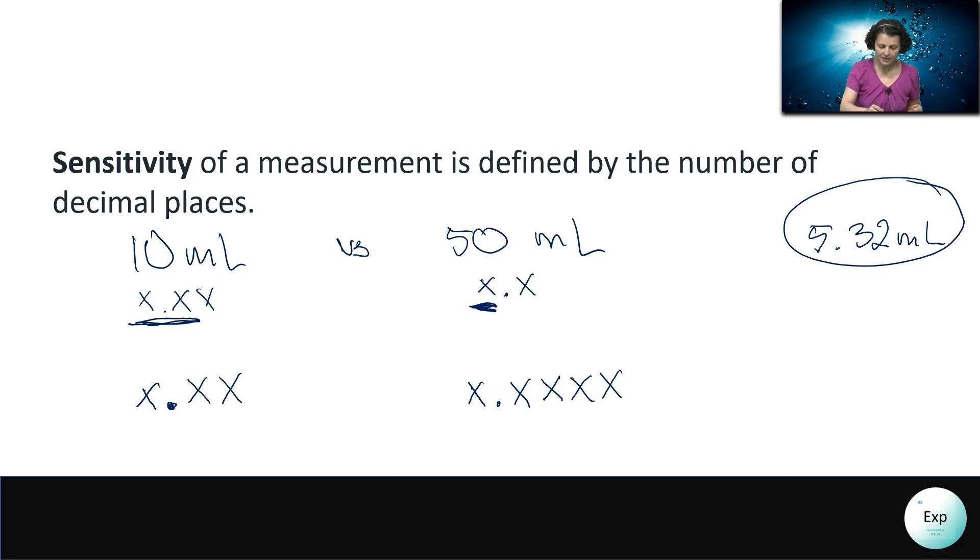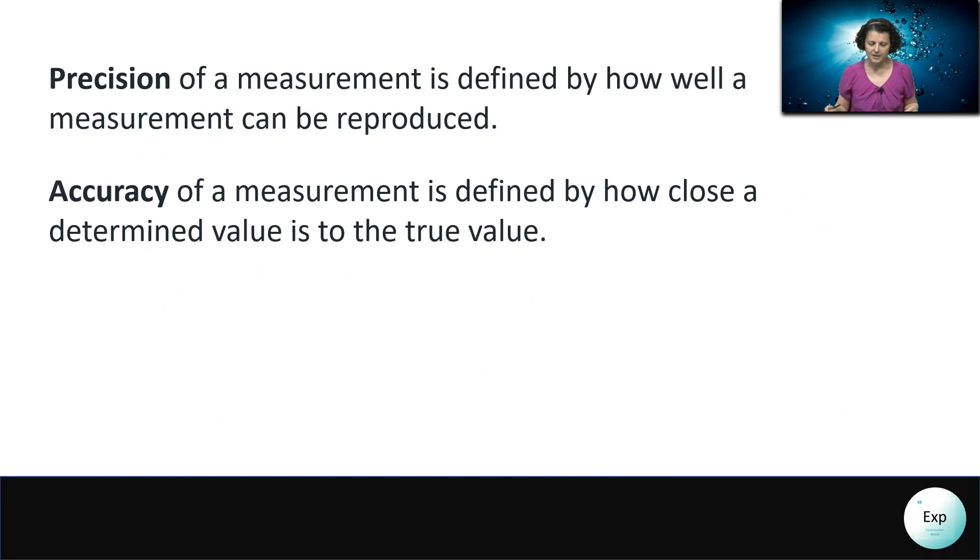In the case of the regular scale, the instrument is guessing the second digit after the decimal place. In the case of the analytical scale, the instrument is guessing the fourth number after the decimal place. So if we would like to measure 0.08 grams of magnesium ribbons, it would be much better if we use an analytical balance to conduct that measurement.